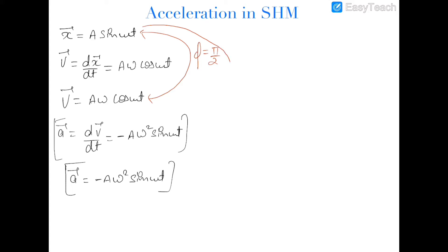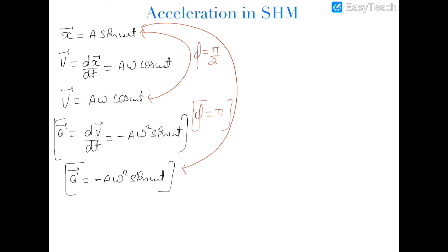Now if we see the phase difference between displacement and the acceleration, you can see that the acceleration is shifted by a phase of pi and it is leading the displacement by a phase difference of pi. So if the question is to find the phase difference between displacement and velocity of SHM, then it is pi by 2 and velocity is leading. And if we have to find the phase difference between acceleration and displacement of SHM, then it is pi and acceleration is leading the displacement.